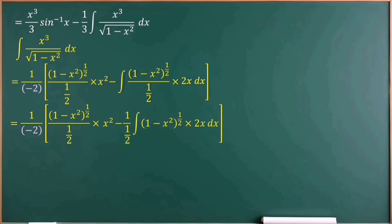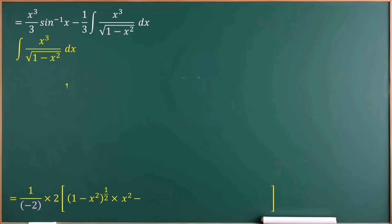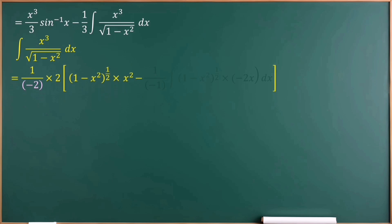Since the denominator of the denominator equals the numerator, we now have 1 over minus 2, within brackets: 2 times (1 minus x squared) to the power of one half times x squared, minus 2 times the integral of (1 minus x squared) to the power of one half times 2x. Now we can take 2 as a common factor. To simplify this integral we use the formula: integral of f(x) to the power of n times f'(x) equals f(x) to the power of n plus 1 over n plus 1 again.